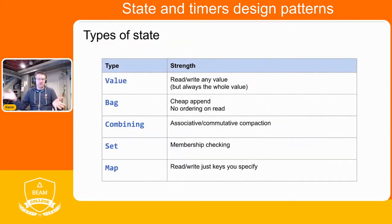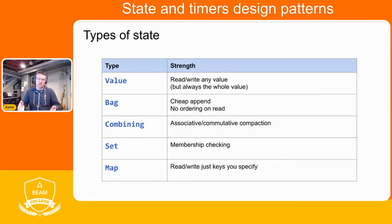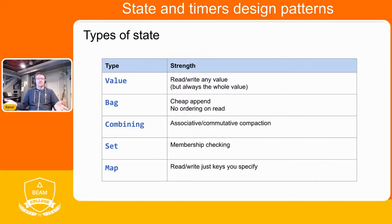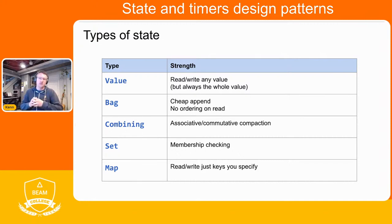There are a few types of state optimized for different access patterns. Value state is just saving one piece of data — you can read and write it, serialized and deserialized each time, always the whole value. Bag state is important — this is how you take a bunch of elements and append them. If you're buffering stuff up, use a bag state; it's cheap to add things without reading the whole thing. Combining state is similar but combines using a combine function when you add something. Sets and maps support expected operations without reading the entire value. There's also a new ordered list state with range selection on a list of elements.